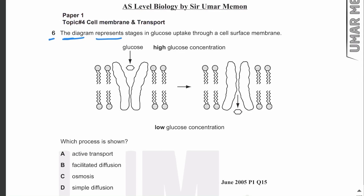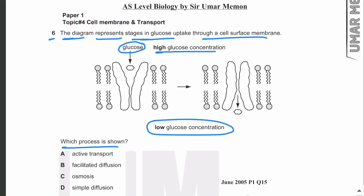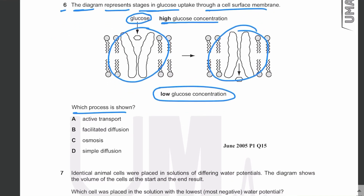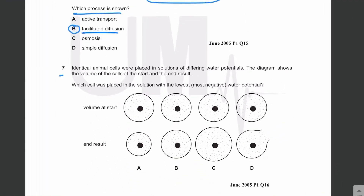The diagram represents stages in glucose uptake through a cell surface membrane — which process is shown? Glucose is at higher concentration outside the cell and lower concentration inside, and it is traveling into the cell via a carrier protein. Because it moves from higher to lower concentration it is diffusion, and because it diffuses through a carrier protein it is called facilitated diffusion. Simple diffusion is when molecules diffuse through gaps between the phospholipids.